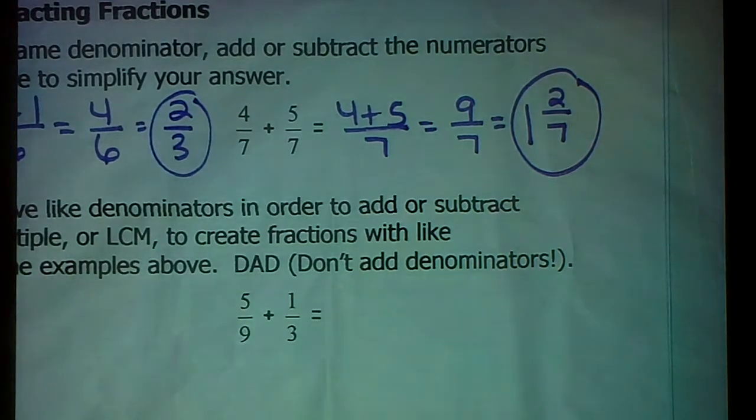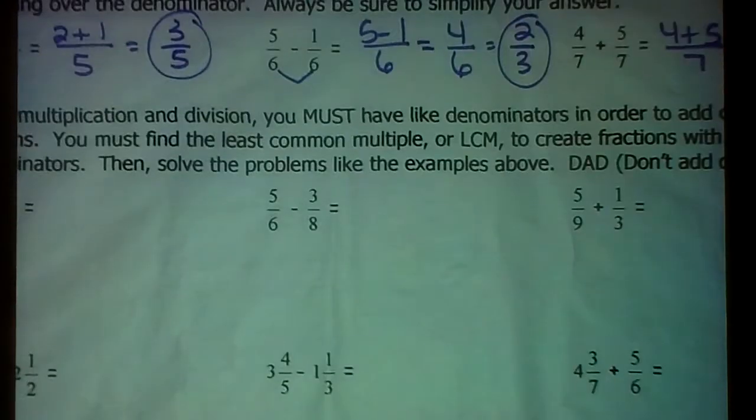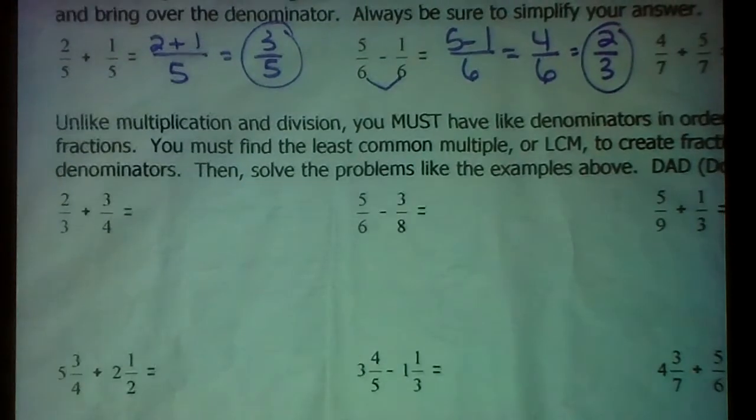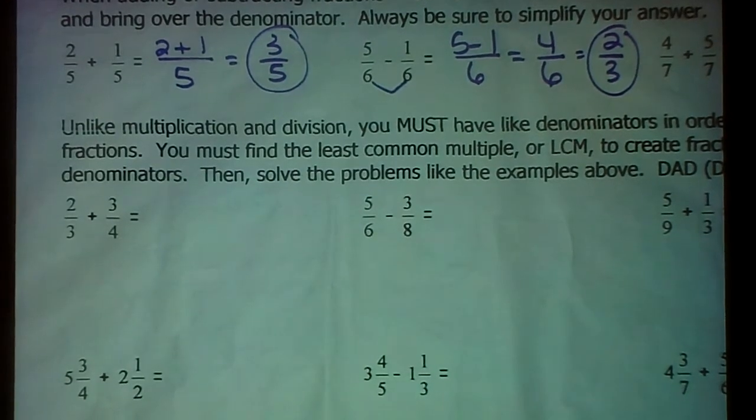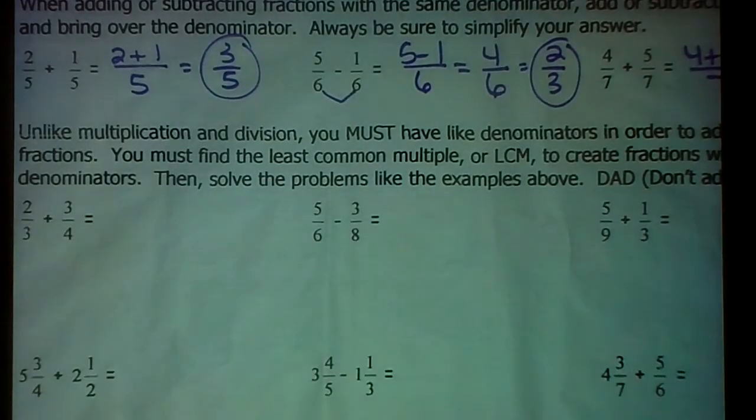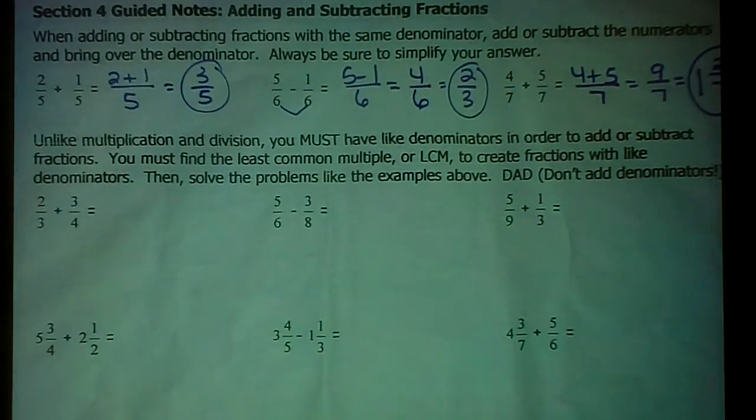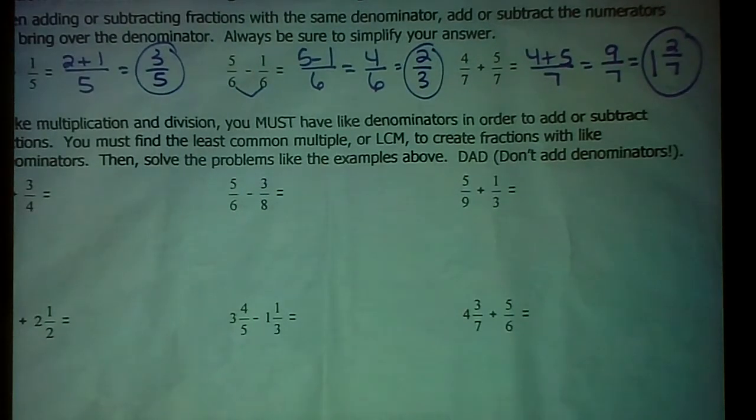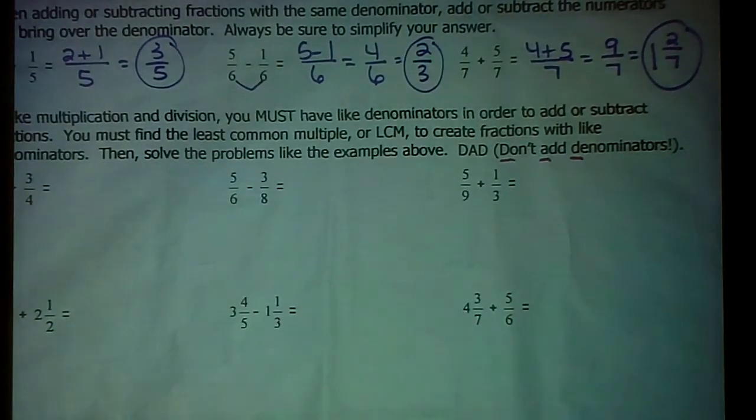Alright, Mrs. Sullivan is going to take you through a few more examples with unlike denominators. This is everybody's favorite. We just know it. But in all honesty, we know this is something that you still have trouble with, and it's why we thought we needed to include it on here because you will be working with this kind of stuff this year in 7th grade, and we need to make sure that you can handle it. So again, unlike multiplication and division, you must have like denominators in order to add or subtract fractions. You must find the least common multiple, or LCM, to create fractions with like denominators. Then you're going to solve the problems like the examples above, and remember our acronym DAD. Don't add denominators. Once you've gone through all this work to get the denominators the same, don't go changing it again.